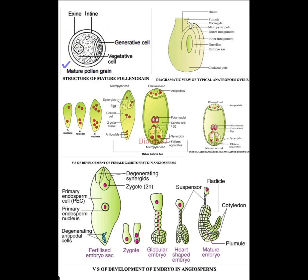The structure of a pollen grain: you know the pollen grain has two wall layers — the outer exine and inner intine — and you can see the two types of cells, that is generative cells and vegetative cells. This could be asked for two marks. Then the diagrammatic view of a typical anatropous ovule — either the embryo sac or the anatropous ovule will be asked.